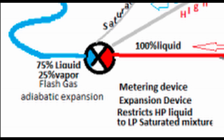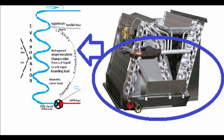That 25% vapor is called flash gas, also called adiabatic expansion. What's happening is that liquid is immediately flashing — changing state from a liquid to a vapor — absorbing heat from itself and from the remaining liquid, dropping that refrigerant's temperature so we're ready to start boiling. Now we have our evaporator coil: inside the majority of it, the refrigerant is saturated and boiling, changing state from a liquid to a vapor, absorbing a massive amount of latent heat away from the air — cooling the air.